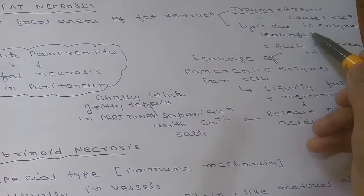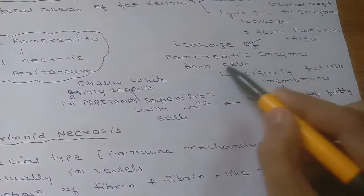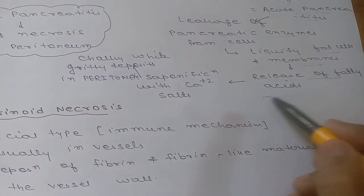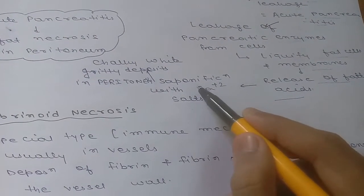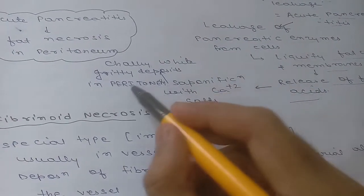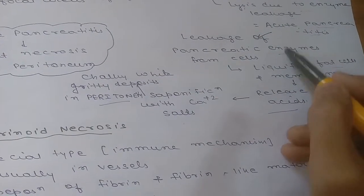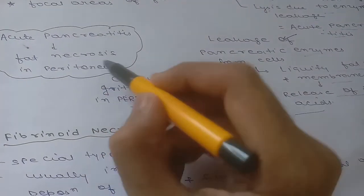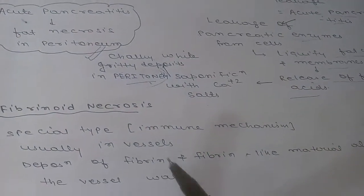Next is fat necrosis, where there are focal areas of fat destruction. The cause may be trauma or enzyme leakage in acute pancreatitis. Leakage of pancreatic enzymes will liquefy fat cells and membranes, releasing fatty acids. These fatty acids combine with calcium salts through saponification, leading to chalky white deposits in the peritoneum. Acute pancreatitis is an important cause of fat necrosis in the peritoneum.